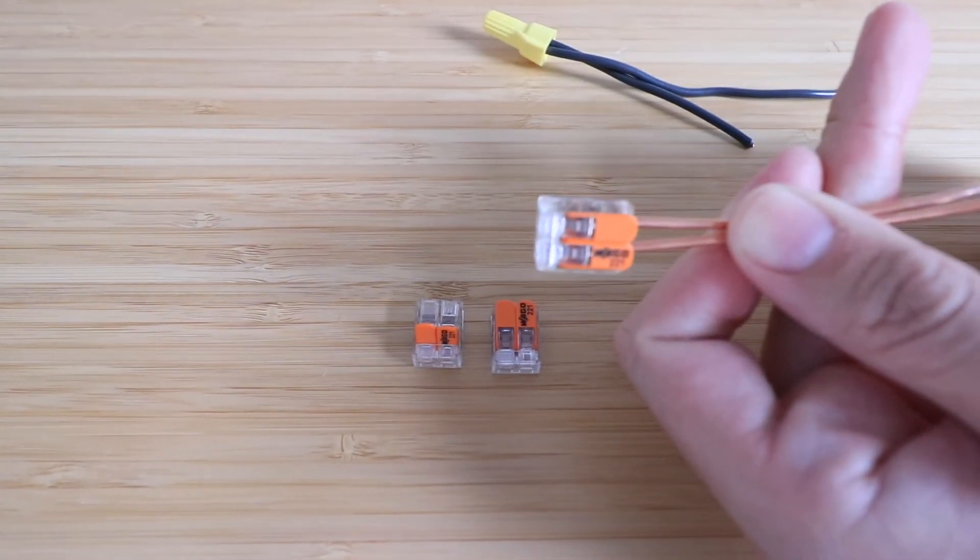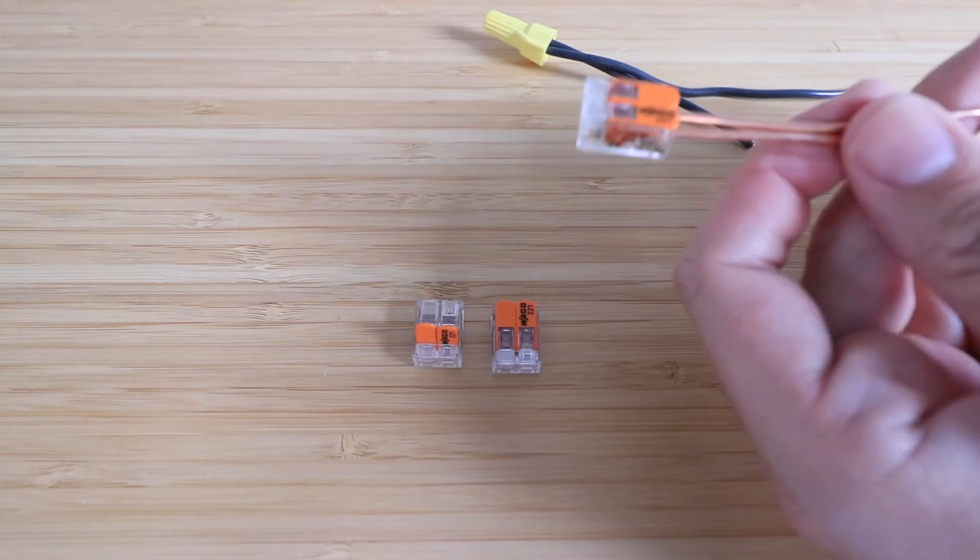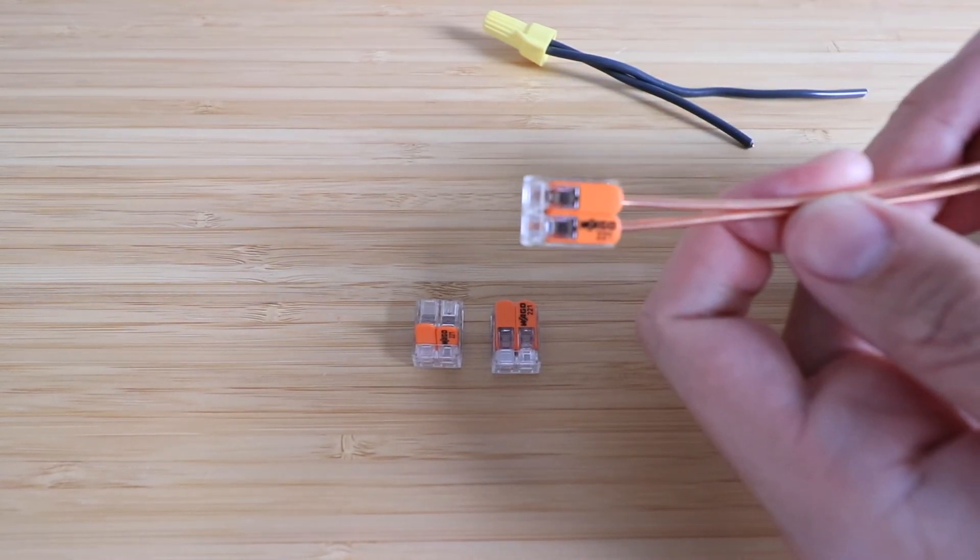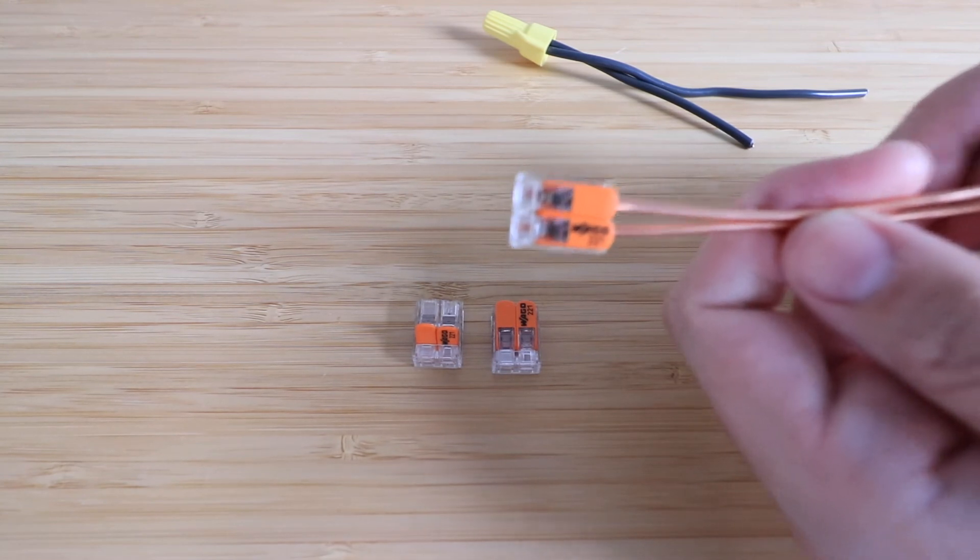There you go, the WAGO lever wire nuts. This is the 412 two conductor. There's all kinds of these things. So thank you for watching this video and we'll see you next time.